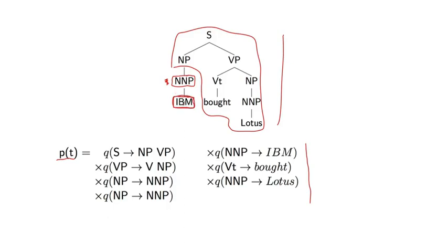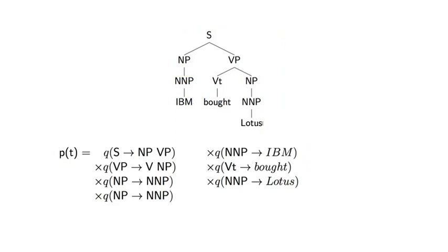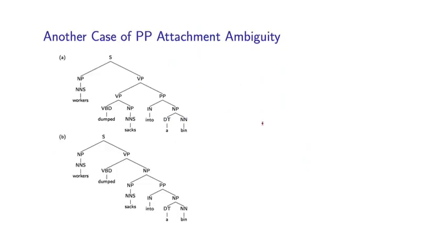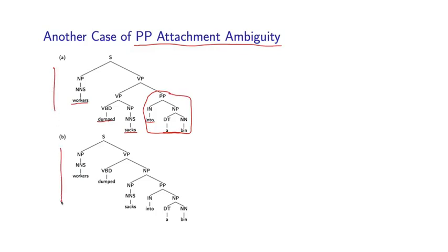We make the assumption that this word is independent of everything else in the tree once we condition on this non-terminal, and in particular, this word is independent of the other words in the sentence. This is an extremely strong and very bad assumption for natural languages. Let's look at a couple of examples where this independence assumption leads to real problems, starting with a case of prepositional phrase attachment ambiguity. The sentence is: 'Workers dumped sacks into a bin.' There is a prepositional phrase here — 'into a bin' — and there are two possible attachments, hence two possible parse trees.